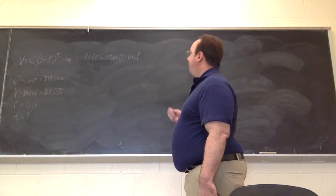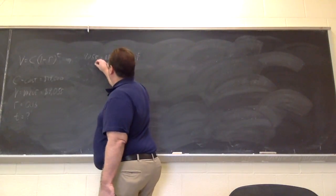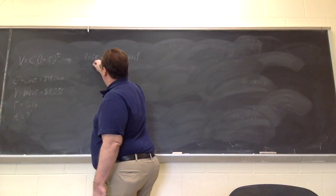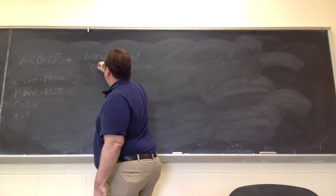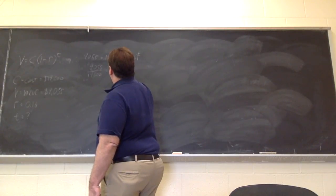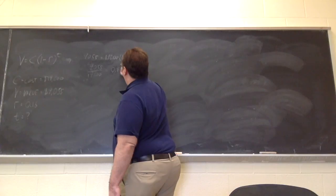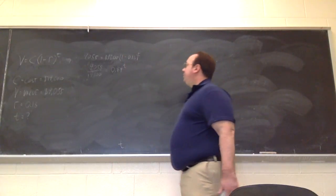So to solve for t, first thing I'm going to do is divide by 19,600. So 9,055 over 19,600 is equal to 1 minus 0.16, so that's 0.84, raised to the t power.